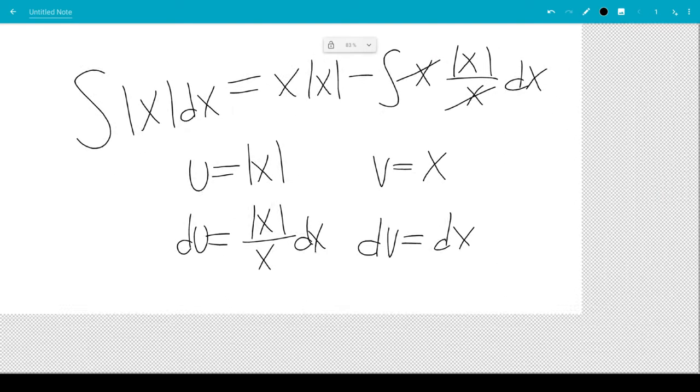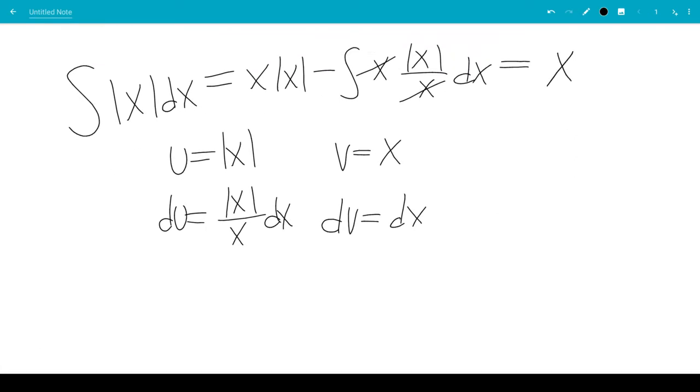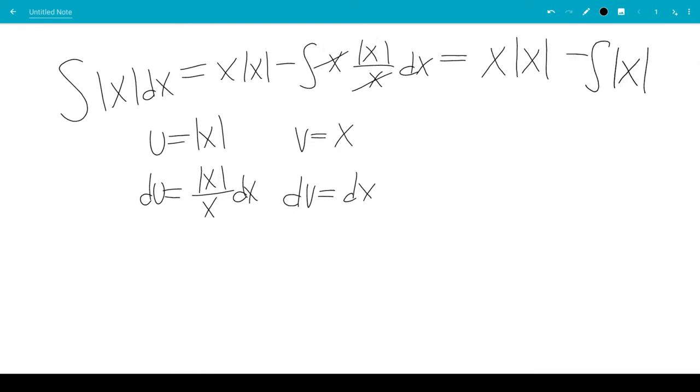x and x will cancel, leaving us with x times absolute value of x, minus the integral of absolute value of x dx.